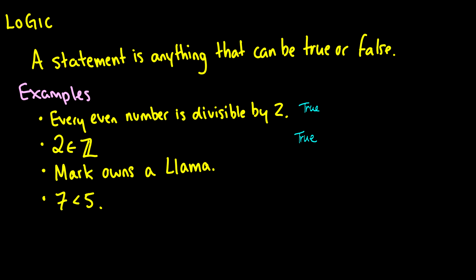Let's talk about this other statement. Mark owns a llama. Who is Mark? I have no idea who Mark is. I don't know if he owns a llama, but if he does own a llama, the statement would be true. If he doesn't, the statement would be false. Therefore, we can say that this is a statement because it could be either true or false.